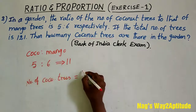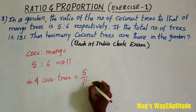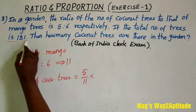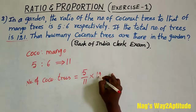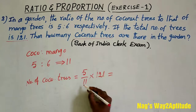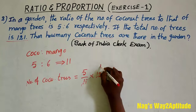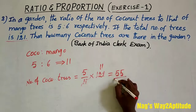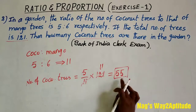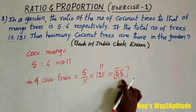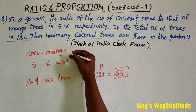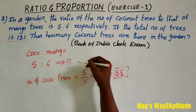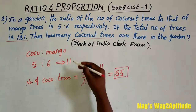So the number of coconut trees is equal to 5 by 11, into the total number of trees which is 121. That is equal to: 11 goes into 121 eleven times, and 5 into 11 is 55. Therefore the number of coconut trees in the garden is 55. Suppose if the number of mango trees is asked, you need to take 6 by 11 into 121, and then you will get the number of mango trees.